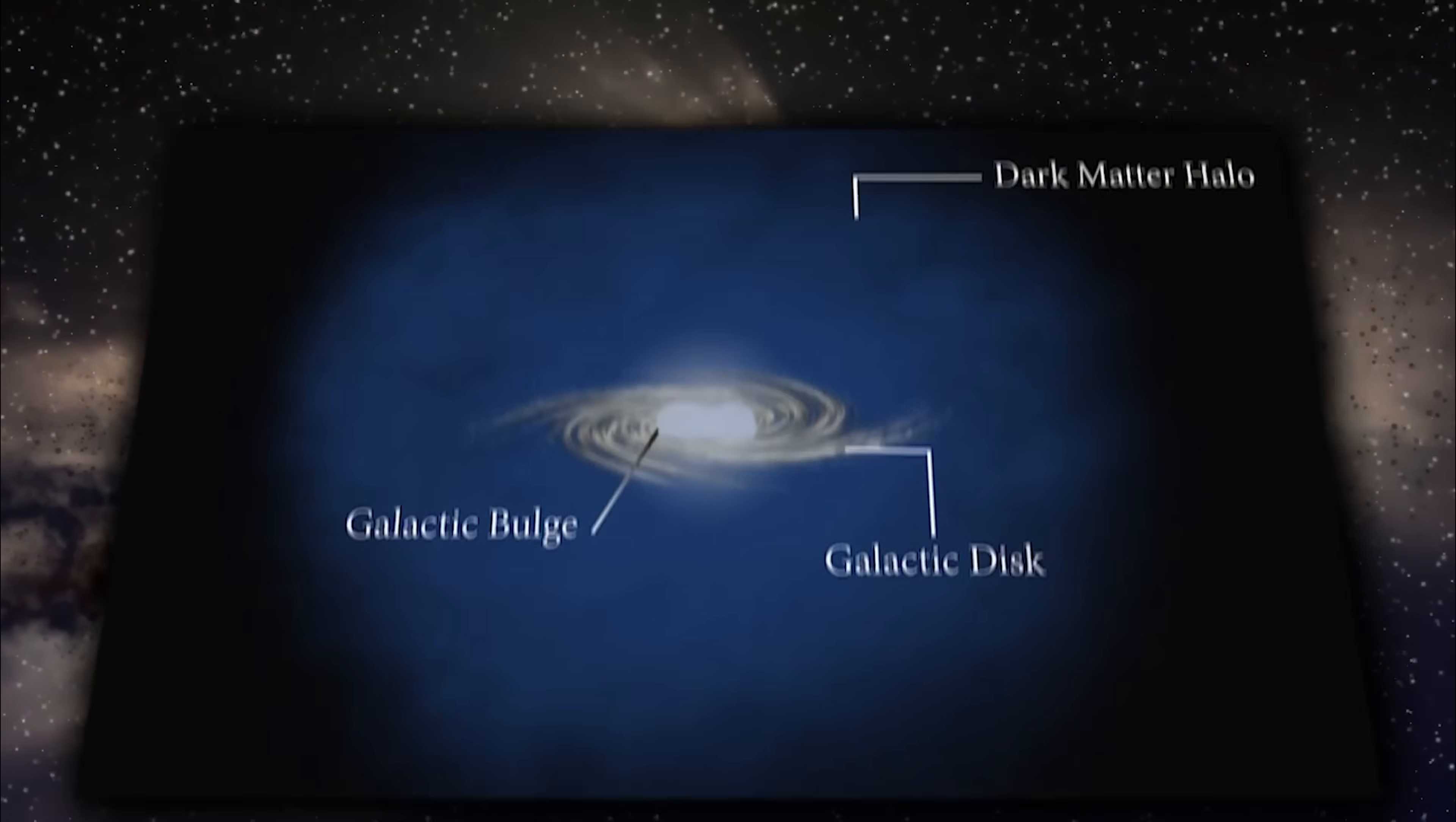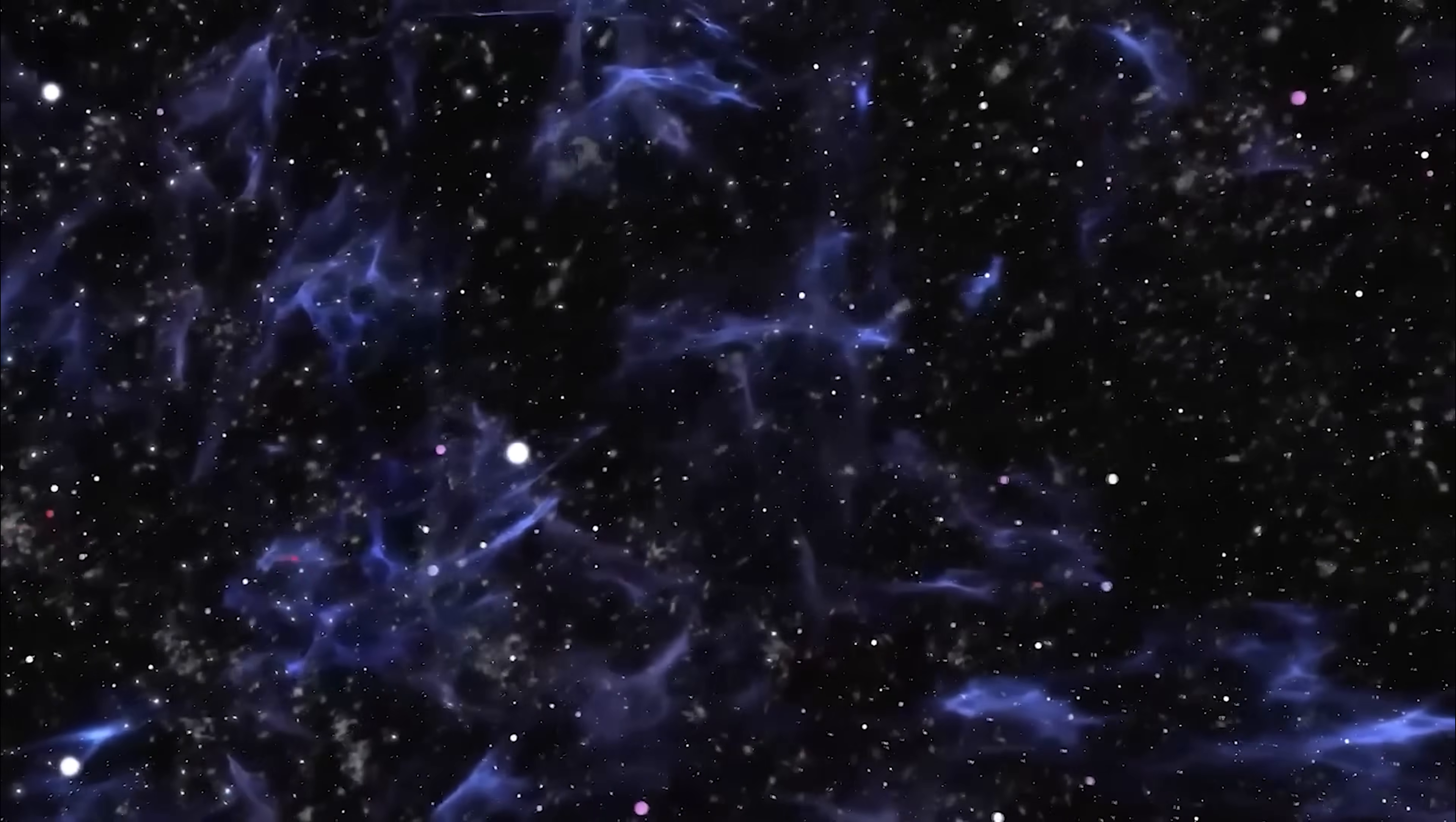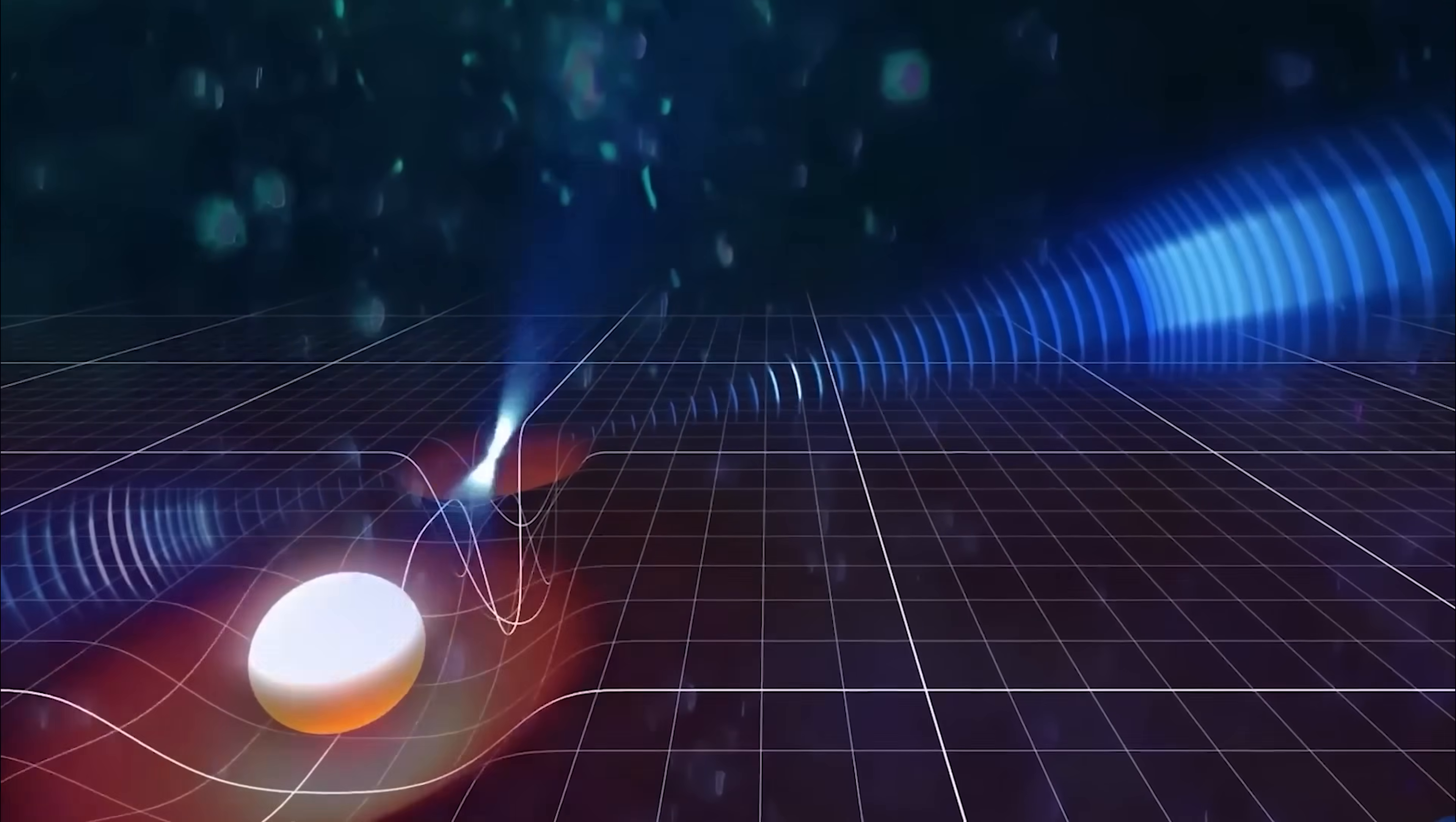If that's true, the Milky Way itself would sit inside a giant invisible halo of dark matter, almost like an enormous bubble holding the galaxy together. In reality though, it's probably not a single smooth bubble, but rather a patchwork of many smaller bubbles within it. Astronomers call these smaller regions subhalos. And in a brand new study, Sukanya Chakrabarti and her team may have detected one of these elusive subhalos by tracking the motions of pulsars.